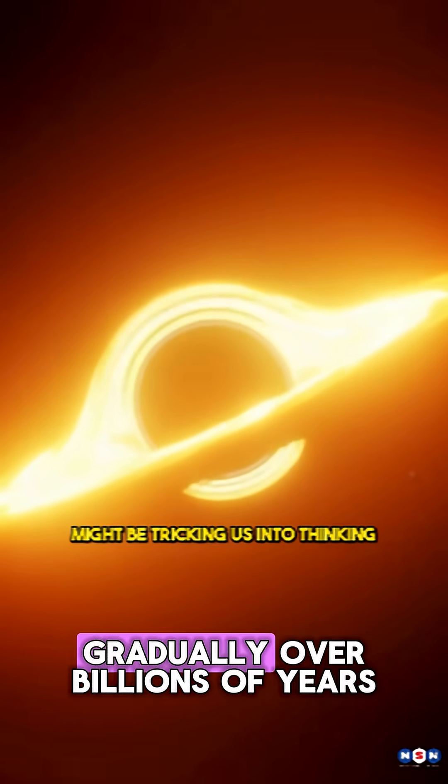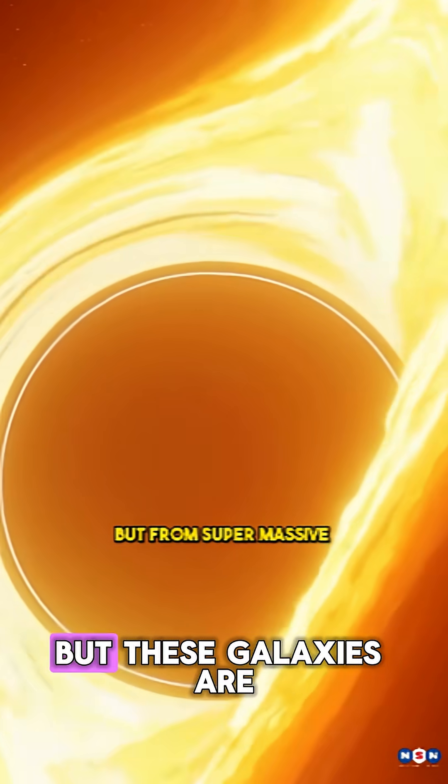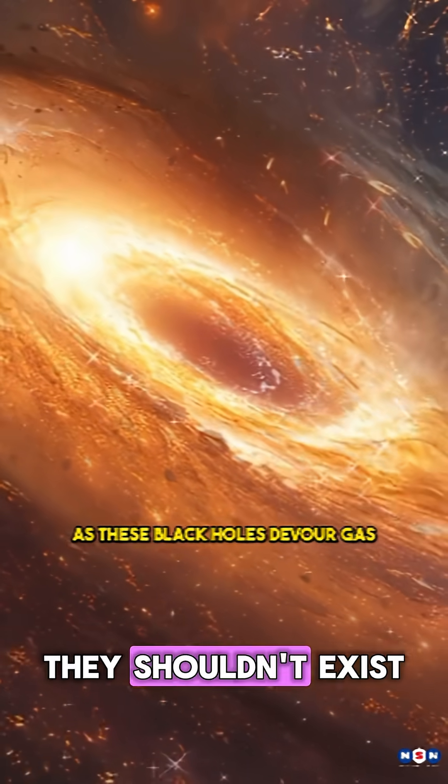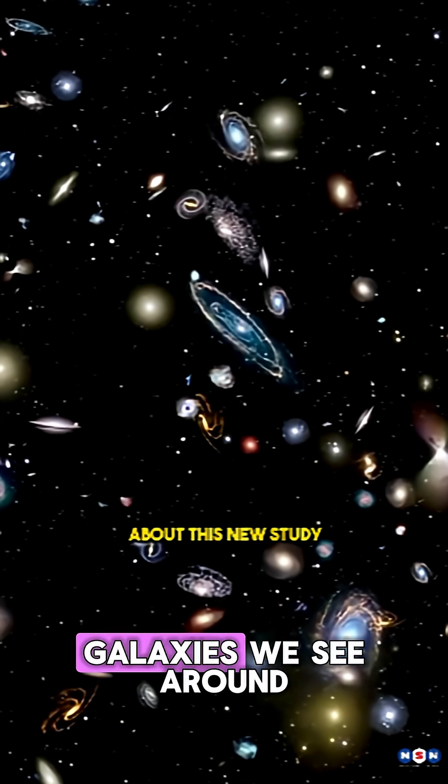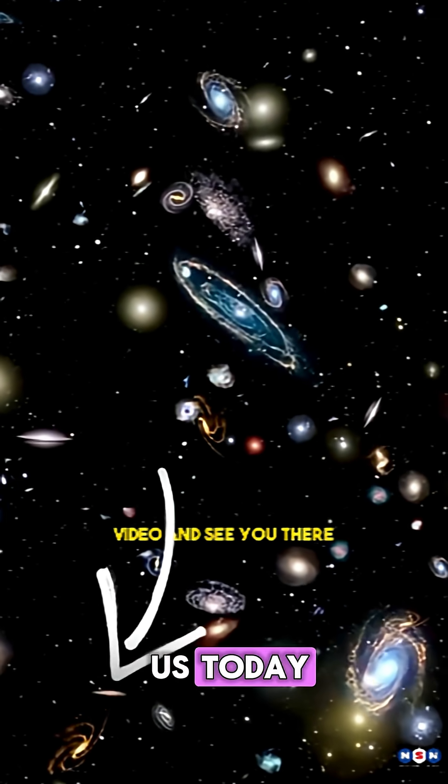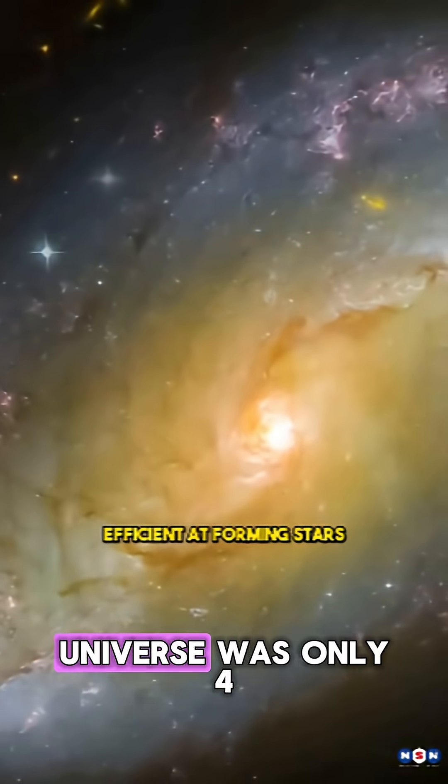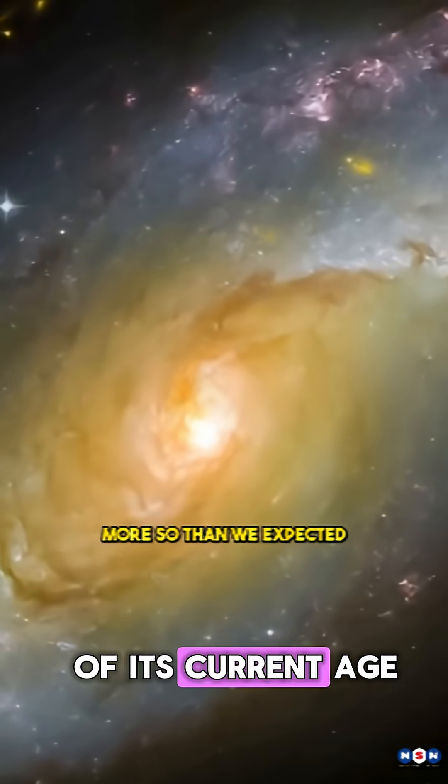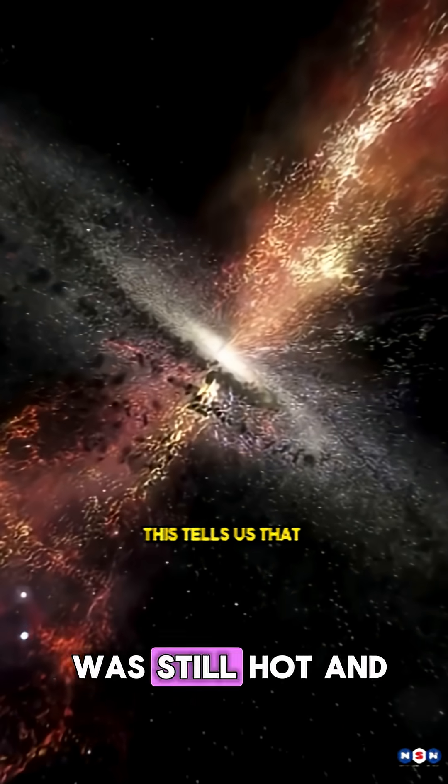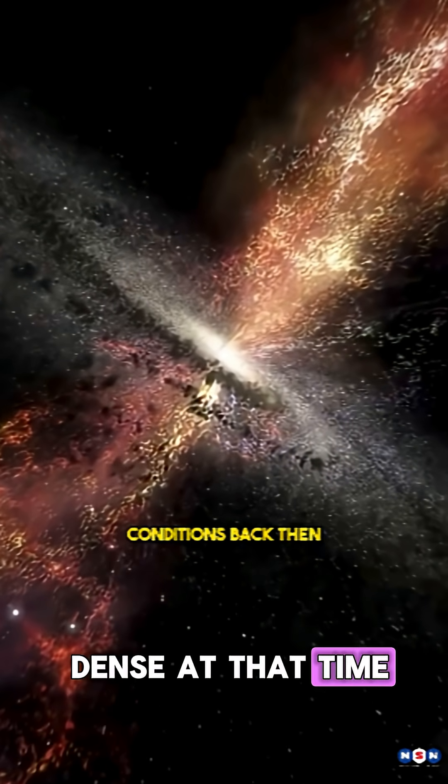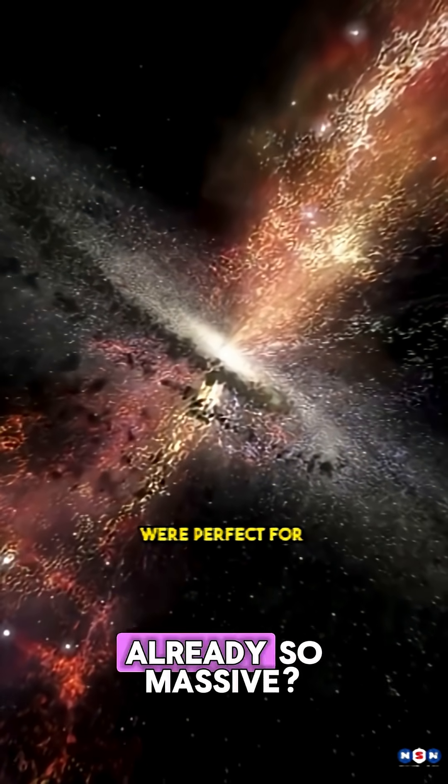This would have happened gradually over billions of years. But these galaxies are massive, and they're so bright they shouldn't exist. They're not like the galaxies we see around us today. These galaxies are from a time when the universe was only 4% of its current age. And if the universe was still hot and dense at that time, why are these galaxies already so massive?